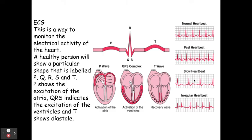In an exam question comparing a normal heartbeat to, for example, a slow heartbeat, you need to use correct terminology. For example: there are more QRSs, or there is a longer distance between the T wave of one heartbeat and the P wave of the next, or you cannot distinguish where the P waves are. Make sure you're using P, QRS, and T within your explanation.